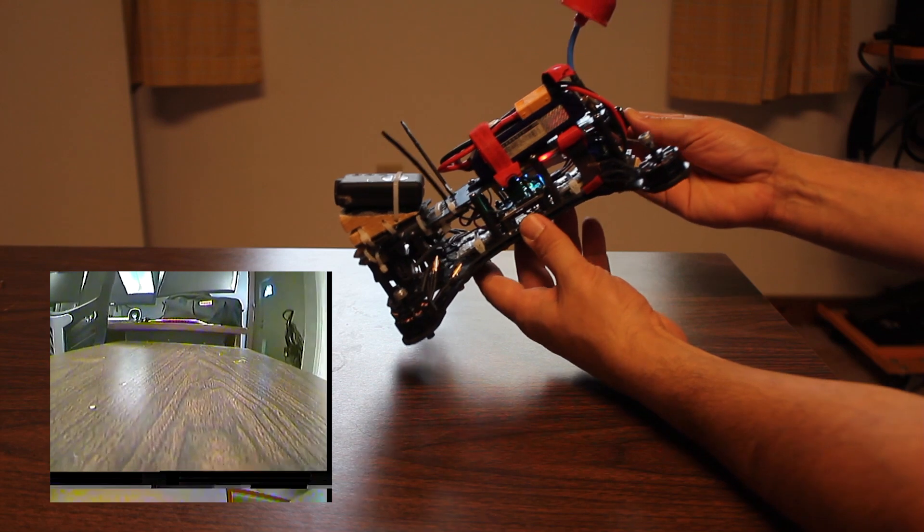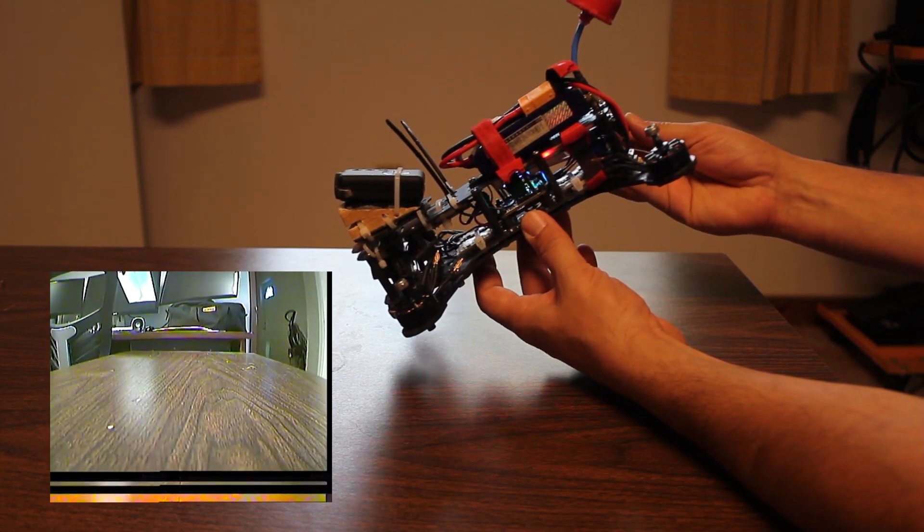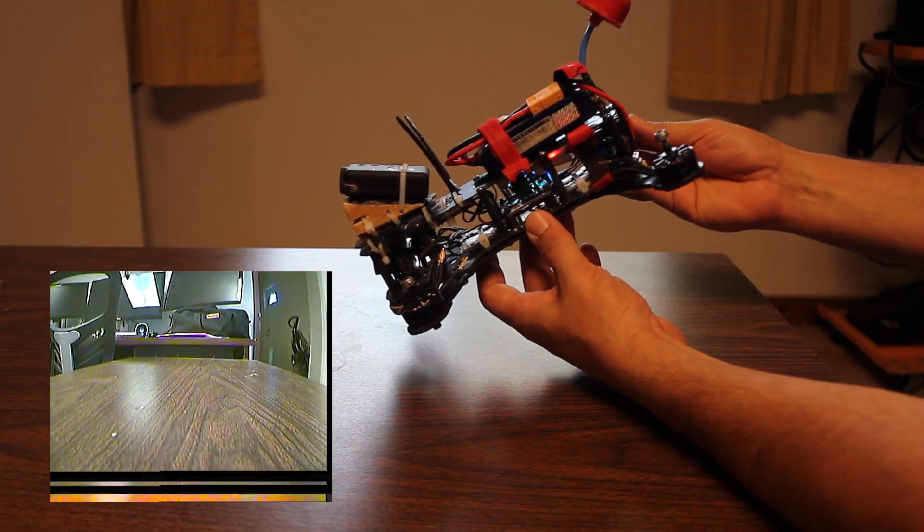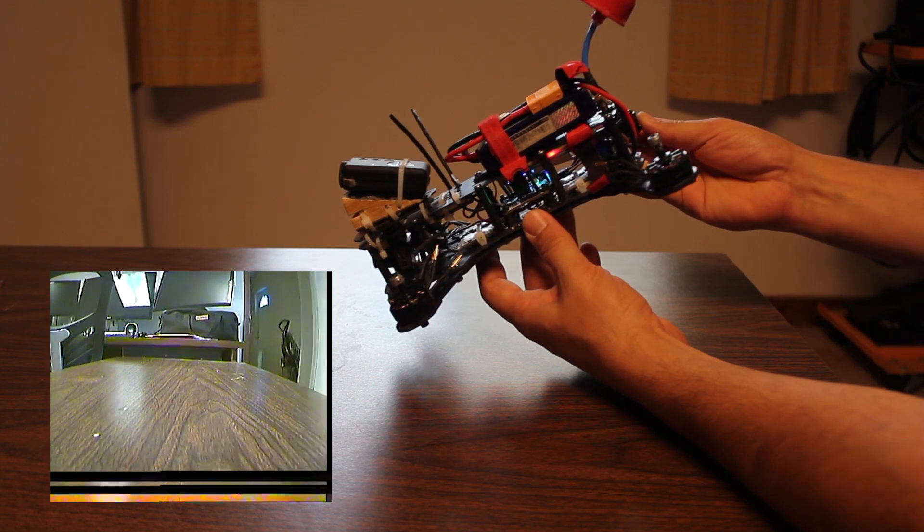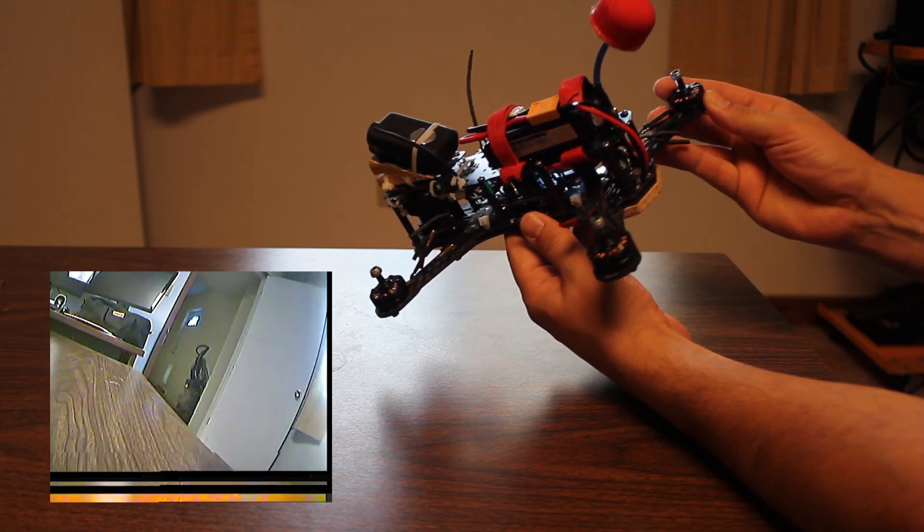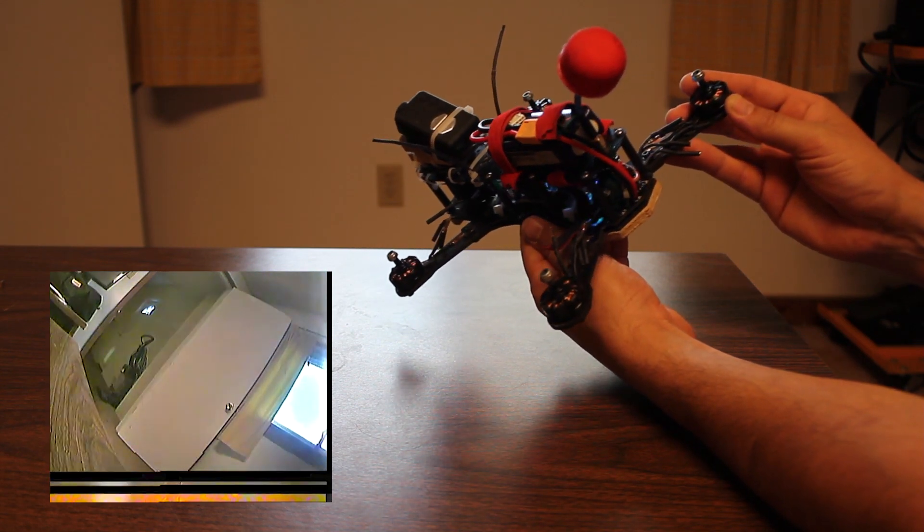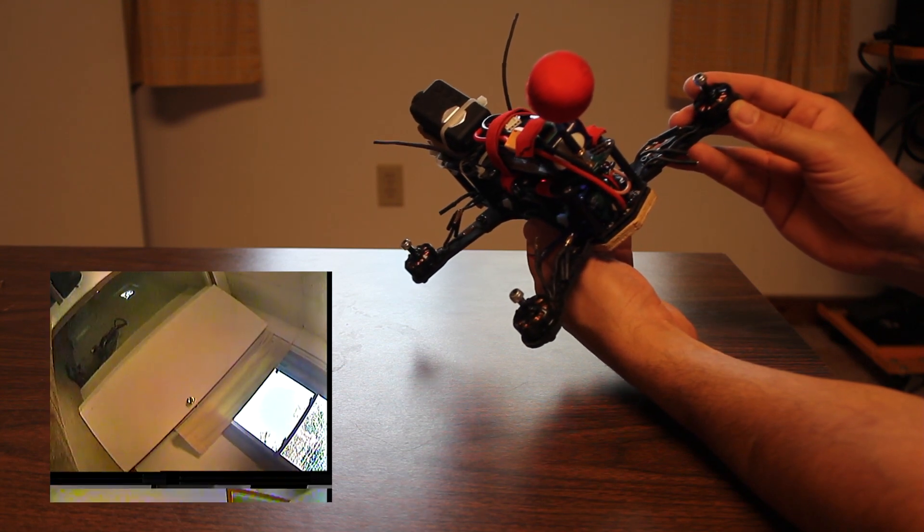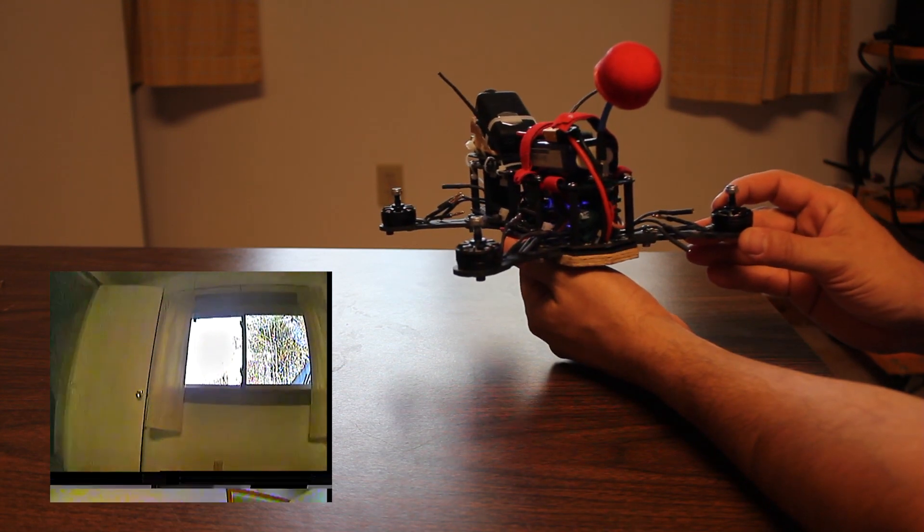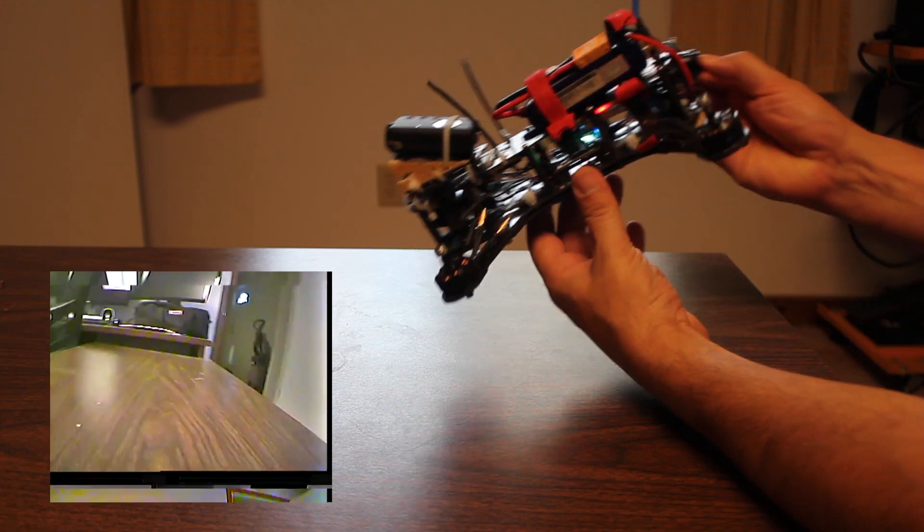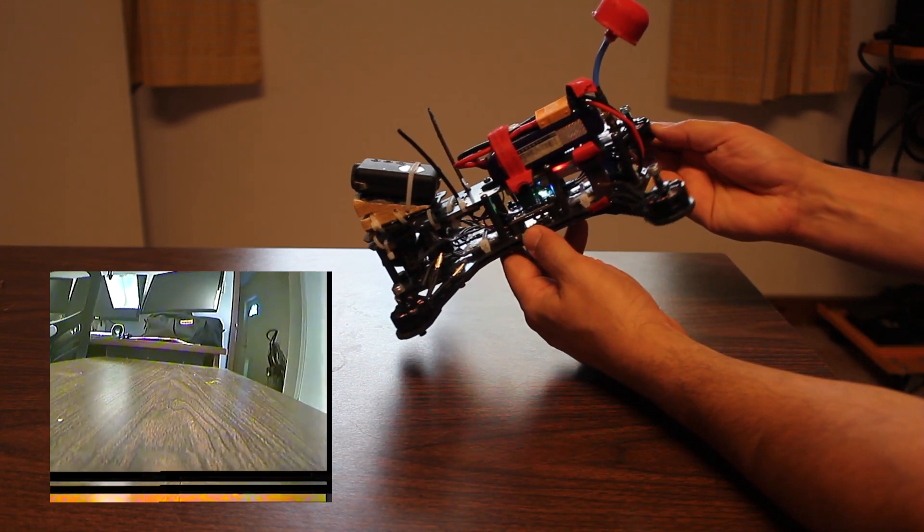So you're going to be tilted forward, pitched forward, flying slowly forward. You're going to use just the yaw stick to start to yaw, watch the horizon start to tilt to the side, and you add just enough roll to cancel that out and flatten back out again.